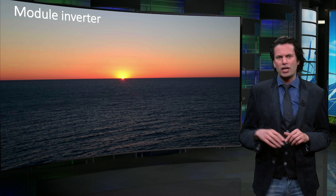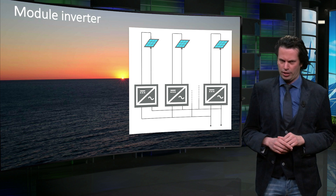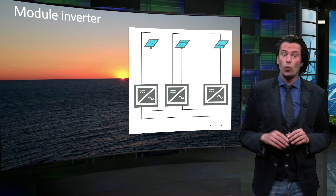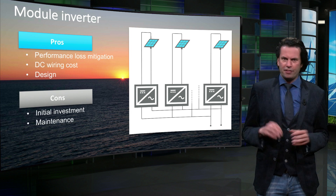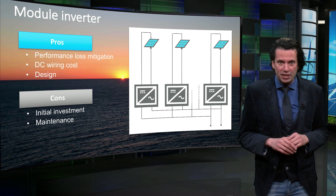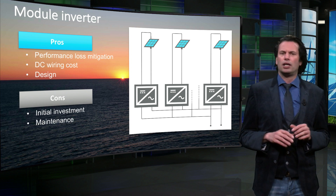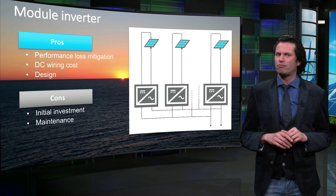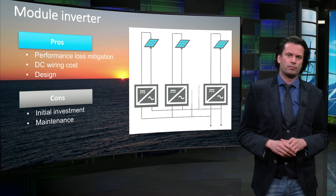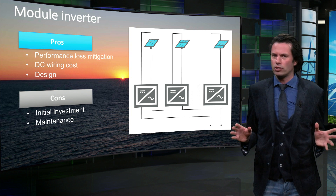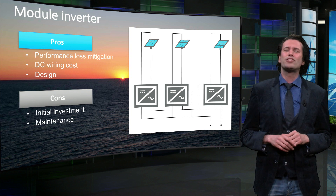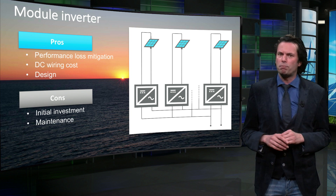Next, let's look at microinverters or module-level inverters. As the name suggests, each module has a dedicated inverter with a maximum power point tracker. Therefore, the topology is more resilient to partial shading effects compared to the central inverter topology. Microinverters provide the highest system flexibility, since extending the size of a system under this topology is far simpler. Furthermore, the DC wiring costs are greatly reduced. However, the investment and maintenance costs tend to increase, especially when the costs per watt-peak are compared.